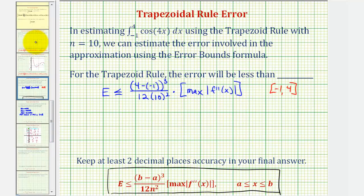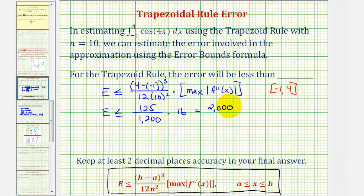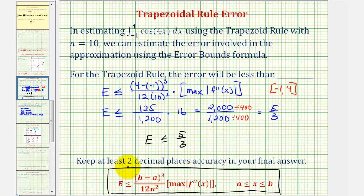Going back to our error calculation, we can now substitute 16 for this maximum function value. So we'd have the error is less than or equal to: this would be five cubed or 125, divided by 12 times 100 or 1,200, times 16, which gives us 2,000 divided by 1,200. These two have a common factor of 400, so this simplifies to 5 thirds. When using the trapezoid rule to evaluate this definite integral with n equals 10, the error will be less than or equal to 5 thirds. Since we have the exact value, there's no reason to convert to a rounded decimal.